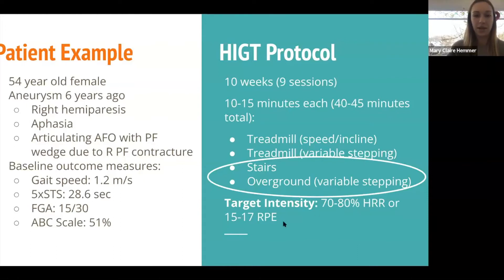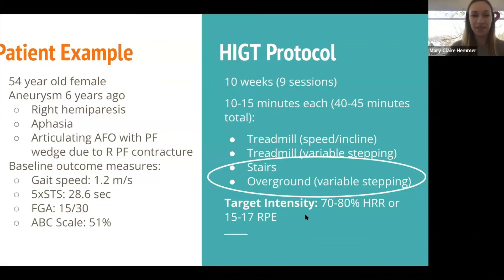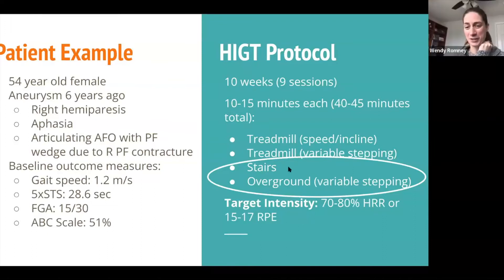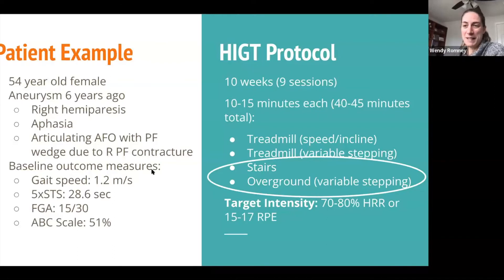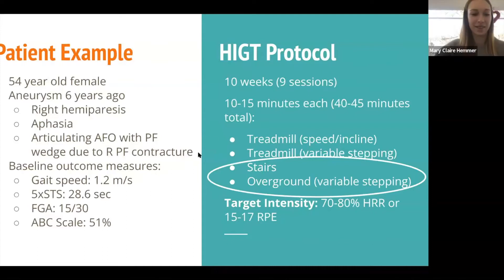A couple of limitations: we only had one treadmill and up to five patients at a time during the class, which made it challenging to get treadmill time. I was personally having a lot of issues with the heart rate monitor, so we relied more heavily on the RPE scale. The patient also did not particularly like the treadmill, so the fact that it was frequently in use actually worked out well — we were able to do more overground training with her, which she liked.